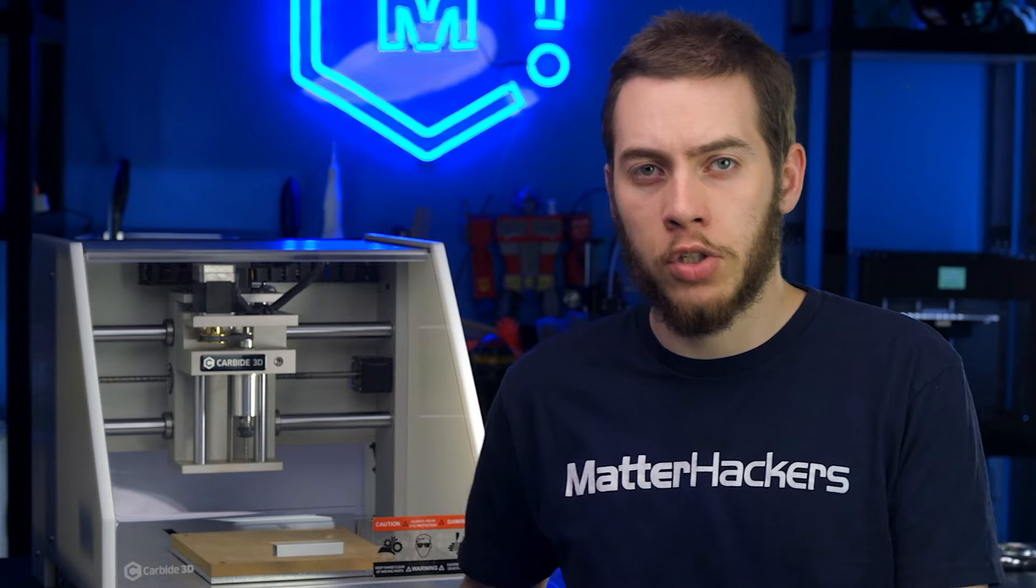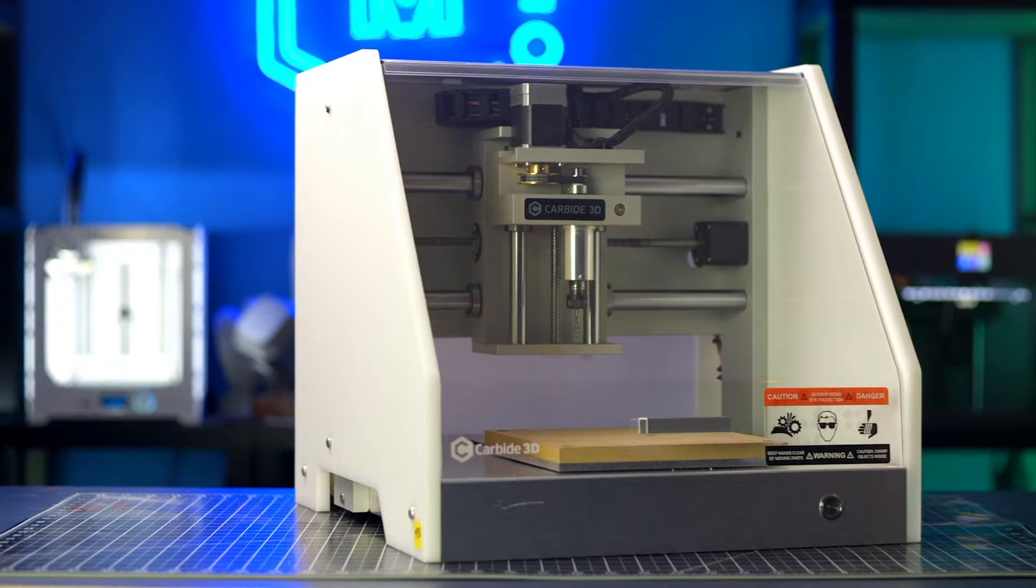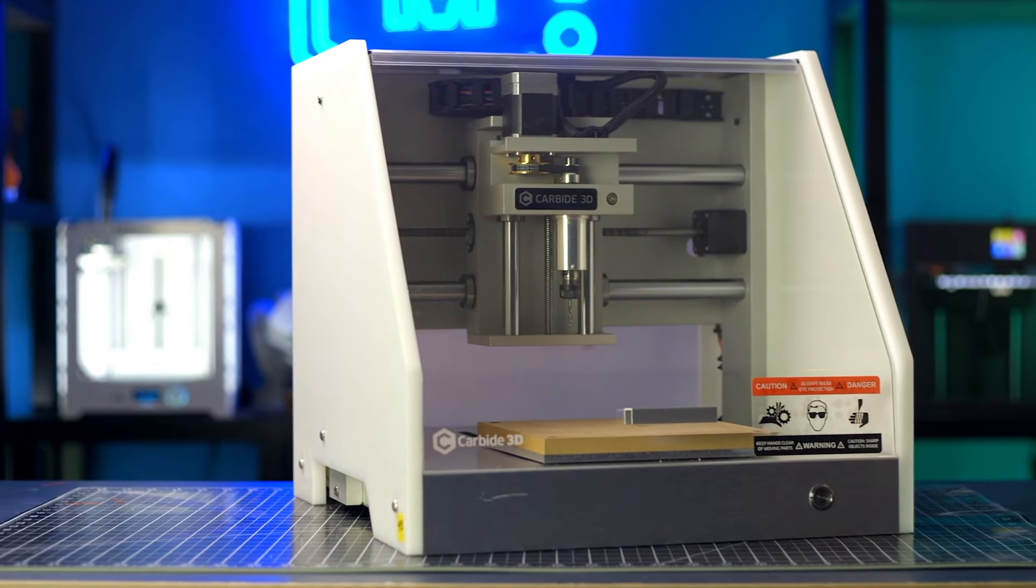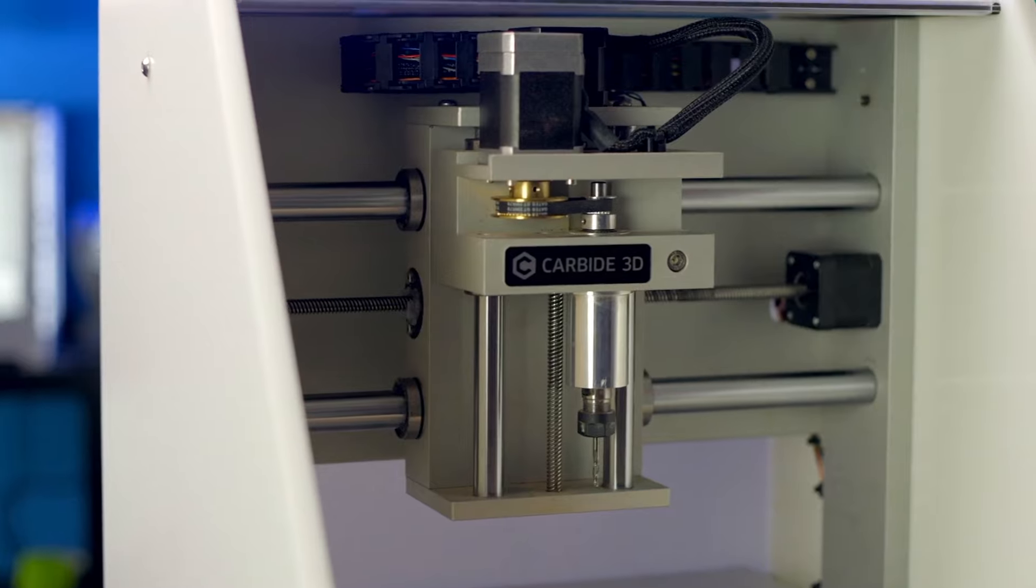In general, desktop mills come in two different form factors. There's small and enclosed, and then there's large and open. The Carbide Nomad and the Z-Morph are some examples of desktop mills that you can easily unbox, set up, and get to carving.